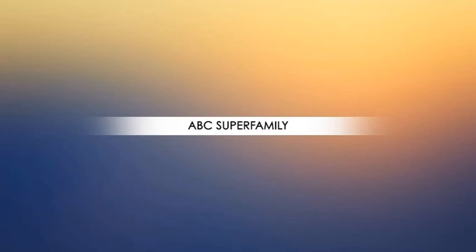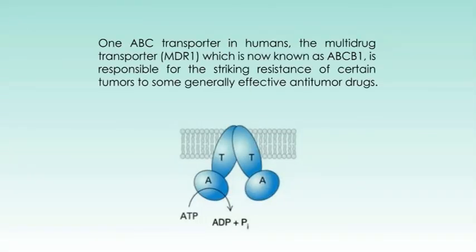Now let's study the fourth class, which is the ABC superfamily. The ABC superfamily of membrane transporters is a large family of ATP-dependent transporters that pump amino acids, peptides, proteins, metal ions, various lipids, bile salts, and many hydrophobic compounds including drugs out of cells against a concentration gradient. They are more diverse in function compared to the other three classes of ATP-powered pumps. This class includes several hundred transport proteins found in organisms ranging from bacteria to humans. One ABC transporter in humans, the multi-drug transporter MDR1 — now known as ABCB1 — is responsible for the striking resistance of certain tumors to some generally effective anti-tumor drugs.